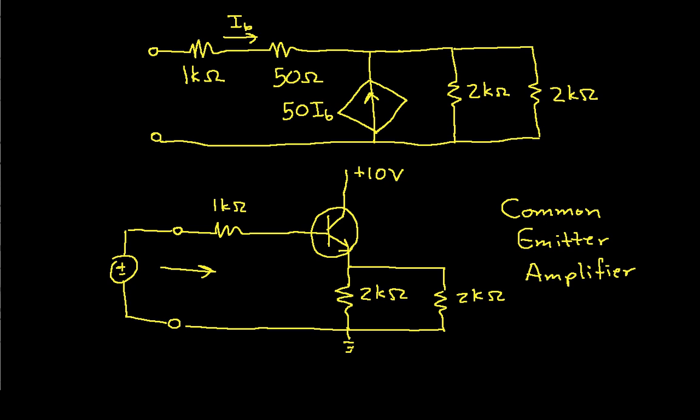Now if you look at the small signal model, I have no independent sources, but I do have one dependent source. So what I will need to do is find the Thevenin equivalent resistance by applying a test source, either a current or a voltage source, finding the resulting voltage or current, and using that to compute the Thevenin equivalent resistance.